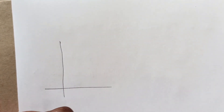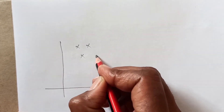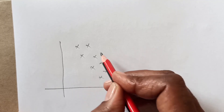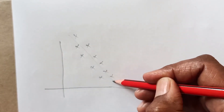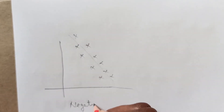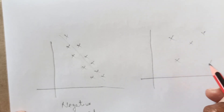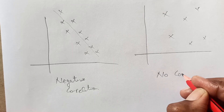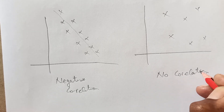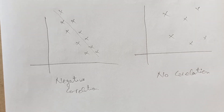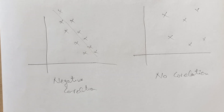Let me explain the correlation types briefly. Positive correlation: points go upward from left to right. Negative correlation: points go downward — as x increases, y decreases, and the line slopes down. No correlation: points are scattered randomly with no clear pattern. I'll try to cover more questions with different correlation types. I hope you understood everything — please like, share, and subscribe. Thank you so much, God bless you.